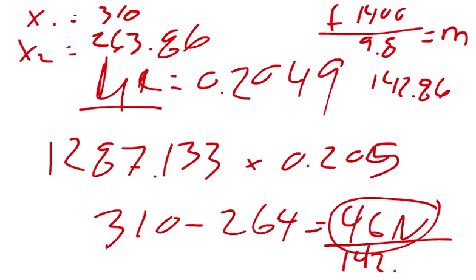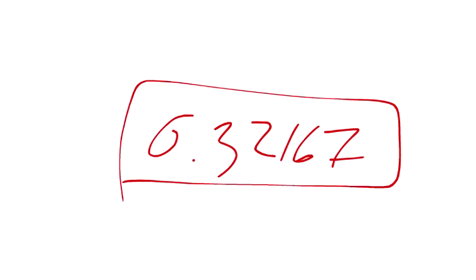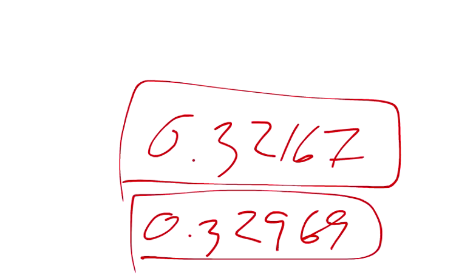So 142.86, 46 divided by 143, and our new acceleration is 0.32167. I was a little bit more precise on my decimals. When I plugged it in, I got 0.32969, and that's what I plugged in, and it was just fine. So the difference being so small, I don't think it's going to matter.